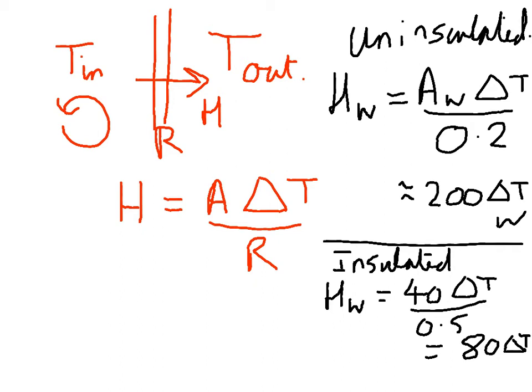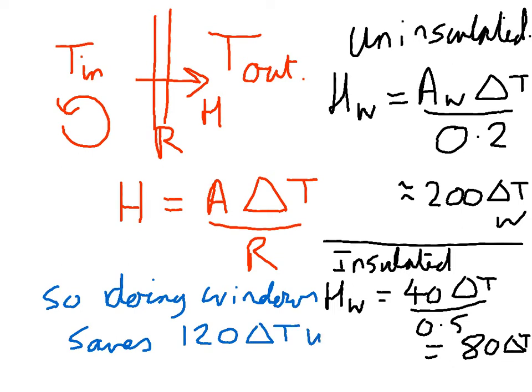So insulating the windows saves 200 minus 80 equals 120 delta T watts.